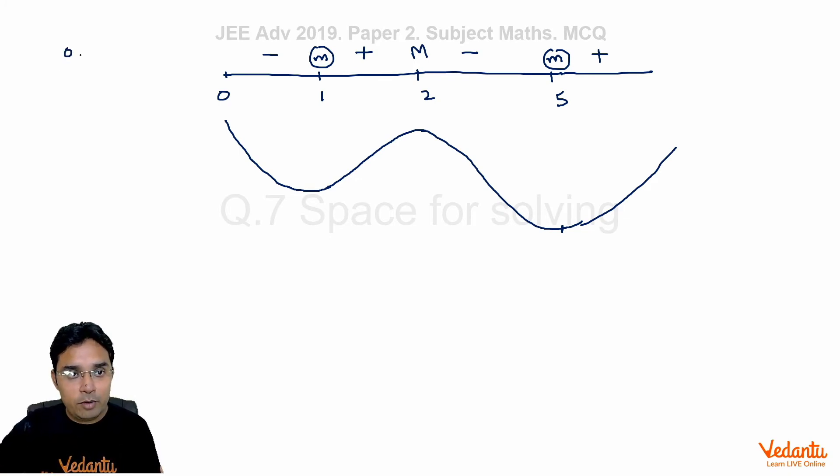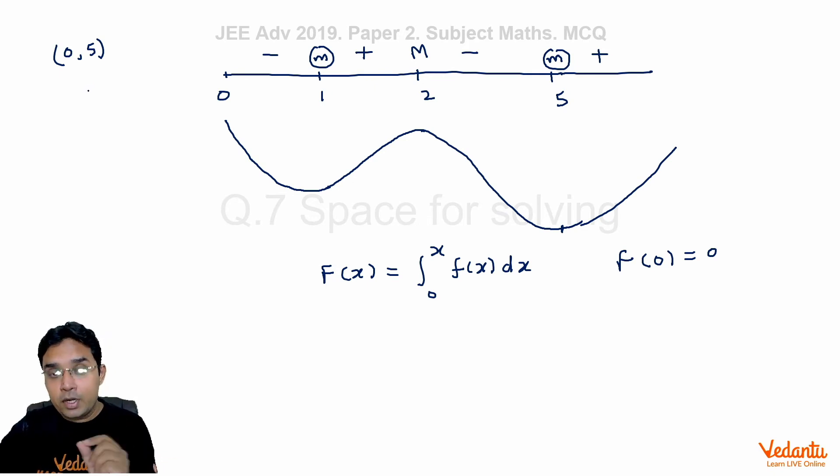5 is the point of minima. Does it have value equal to zero or not? And we have to find this in the open interval (0, 5). Our F(x) function is integral from 0 to x of f(t) dt, which means obviously F(0) will be equal to 0, but we are looking from open interval 0 to 5.